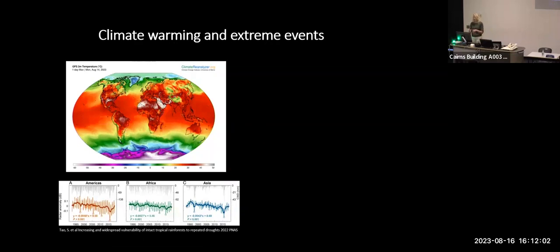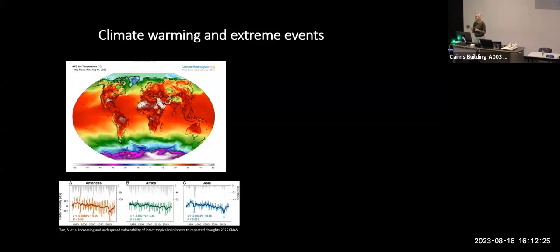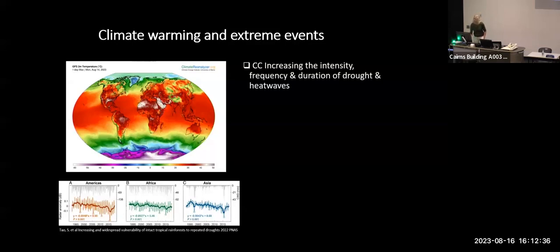In Cairns we've been experiencing a wet winter, but that's not the case for other Southern Hemisphere countries. Both in Africa and South America they've been experiencing really abnormal high temperatures. In Santiago, just a week ago, there was a 37-degree day at 1,500 metres up the Andes - very alarming because it's winter and high elevation. Climate change is increasing the intensity, frequency, and duration of droughts and heat waves.